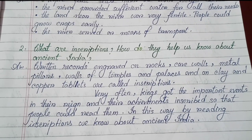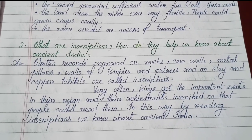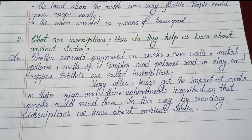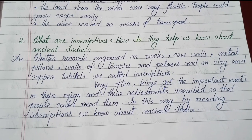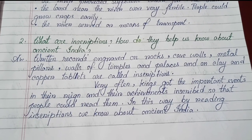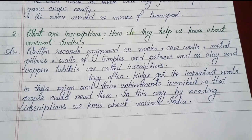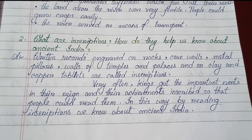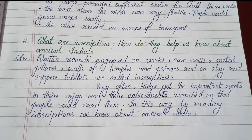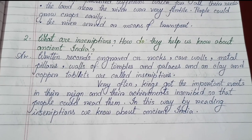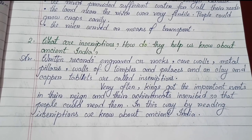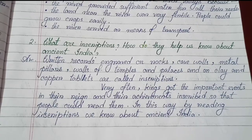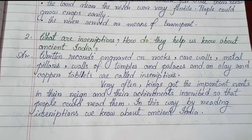Number two: What are inscriptions? How do they help us know about ancient India? Written records engraved on rocks, cave walls, metal pillars, walls of temples and palaces, and on clay and copper tablets are called inscriptions. Very often, kings got the important events of their reign and their achievements inscribed so that people could read them. In this way, by reading inscriptions, we know about ancient India.